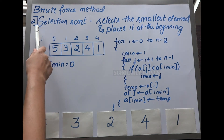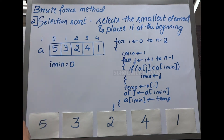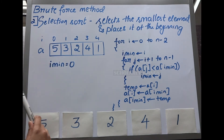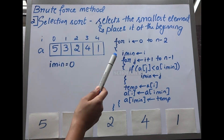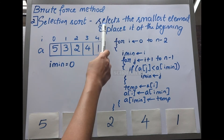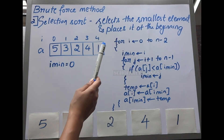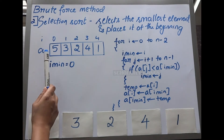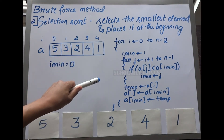The next sorting algorithm under the brute force method is called the Selection Sort algorithm. It is an in-place comparison sorting algorithm that selects the smallest element and places it at the beginning of the unsorted list.